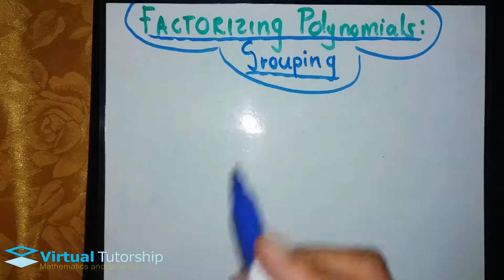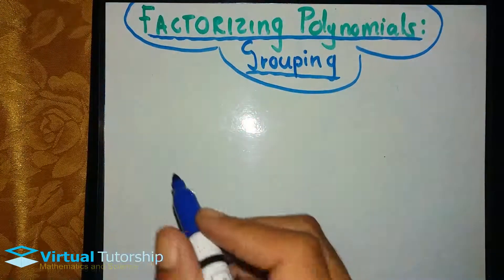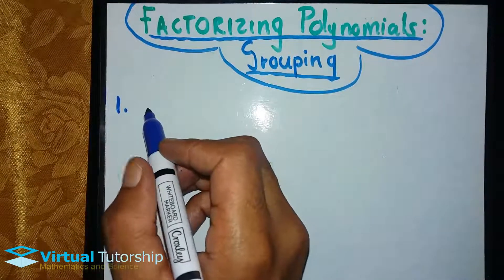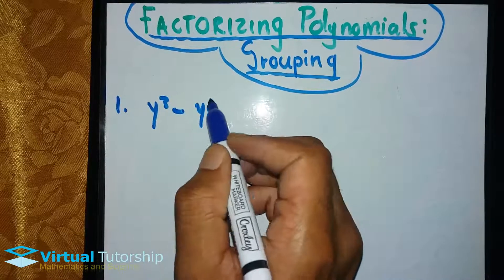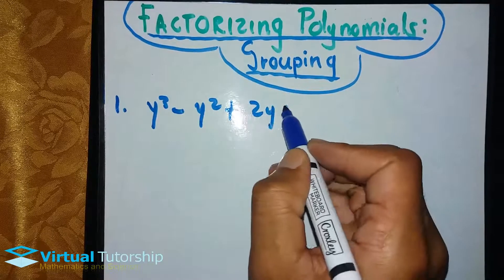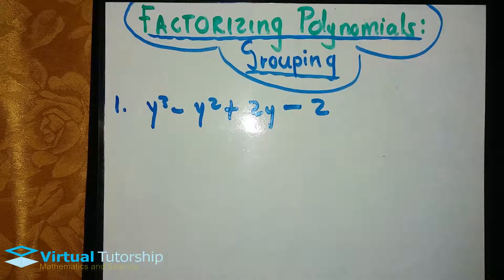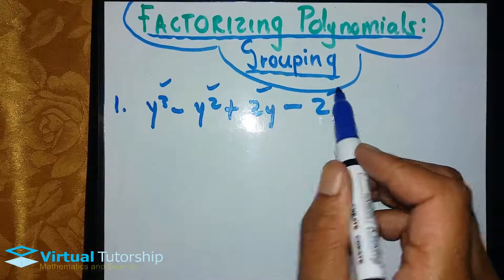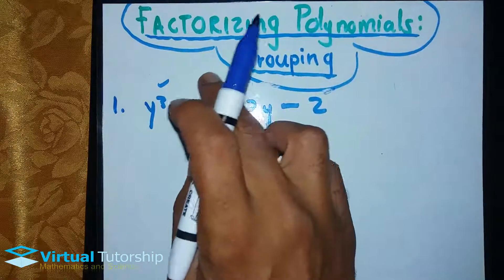Using the grouping method, it only applies if you have 4 terms in your polynomial. So, say maybe y cubed minus y squared plus 2y and then minus 2. The grouping method only applies when you have 4 terms — 1, 2, 3, 4 terms.